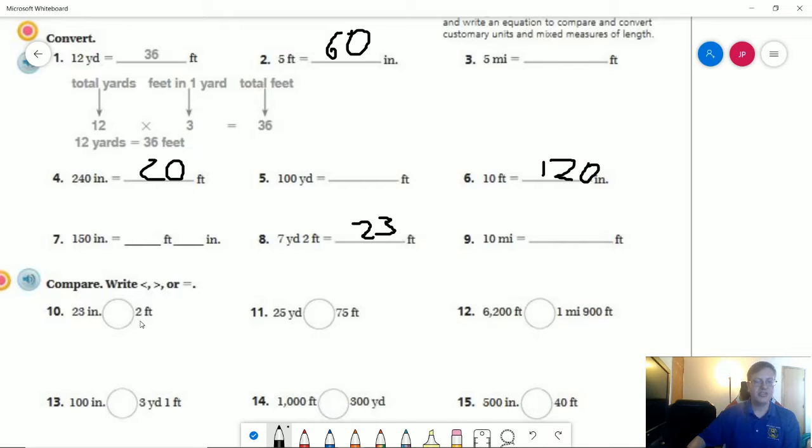Number 10, two feet is worth 24 inches. So two feet would be the larger side. So 23 inches is less than two feet. For a mile, it would be 5,280 feet.